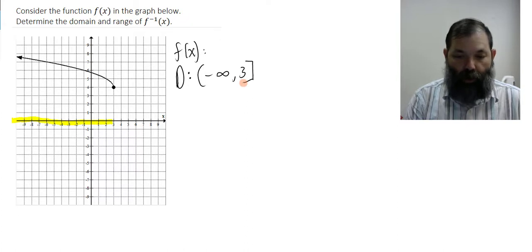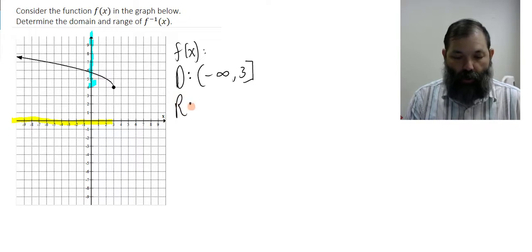The range appears to go from 4 to positive infinity. And so then the range is bracket 4, comma, infinity.